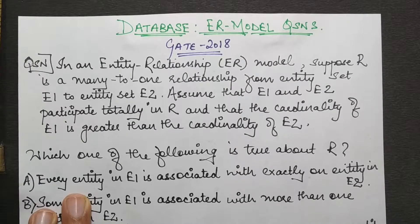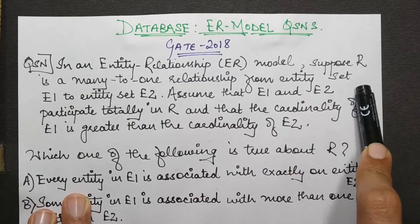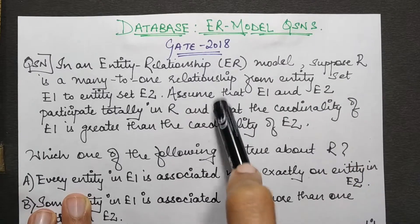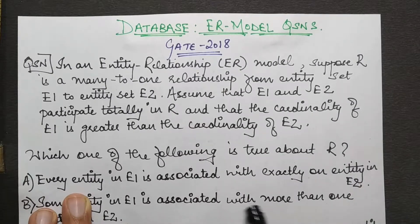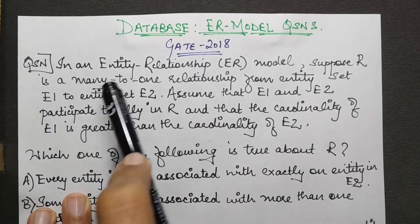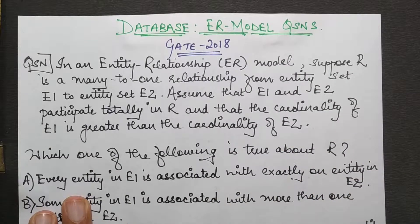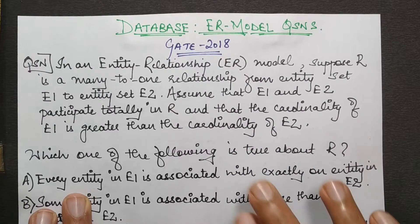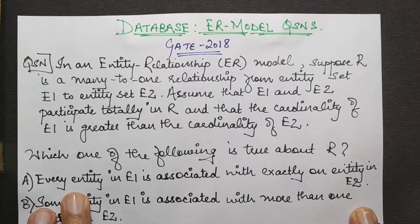So the question states that E1 and E2 participate in a relationship R which is a many-to-one relationship from E1 to E2 direction, and the other thing is that both of them participate totally in this relationship. So then we need to check which of the following is true. Let's consider the facts one by one.